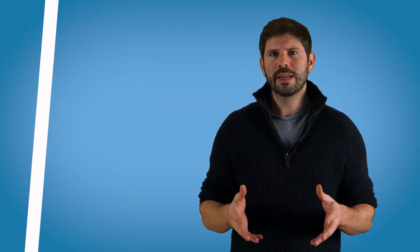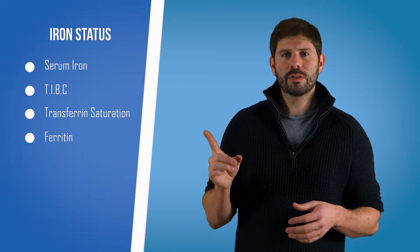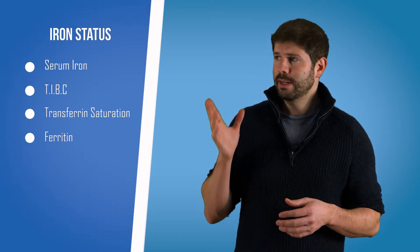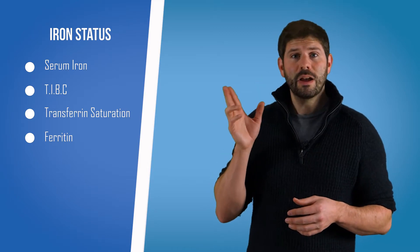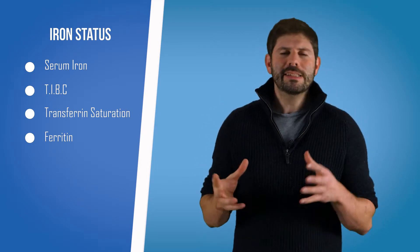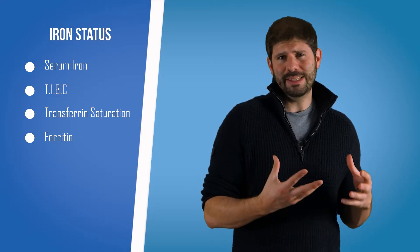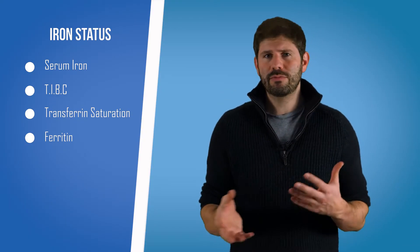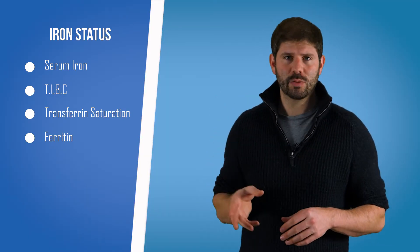When we look at the iron blood test, we're looking at four main markers: serum iron, TIBC or total iron binding capacity, transferrin saturation, and ferritin. So let's start with serum iron. Well, serum iron is just the general measure of iron in your blood. It's not a fantastic measure because it goes up or down really easily depending on what you've just eaten. So to put that into context, we look at the other things as well.